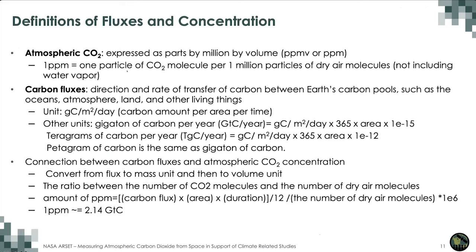Carbon fluxes represent the direction and rate of transfer of carbon between Earth's carbon pools — the atmosphere, ocean, and land. The units of carbon fluxes we normally use are grams of carbon per square meter per day. For annual carbon fluxes, we use gigaton carbon per year, which equals grams carbon per square meter per day times the number of days per year times the area, with a unit conversion of 10 to the power of minus 15. Other units include teragrams carbon per year and pentagrams, which is the same amount as gigaton carbon per year.